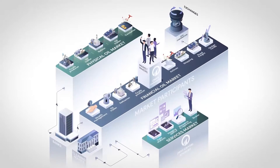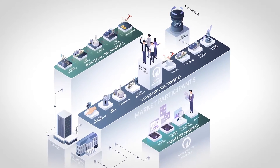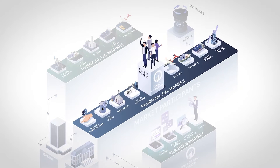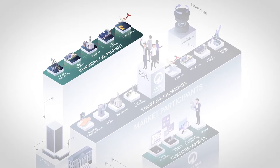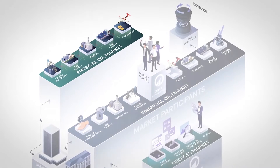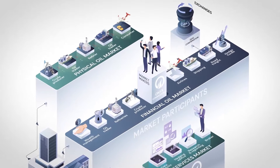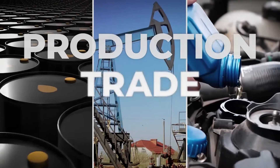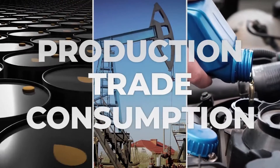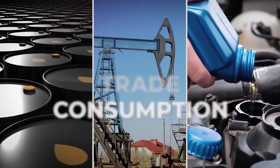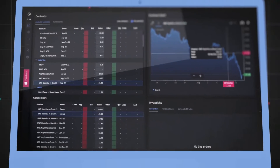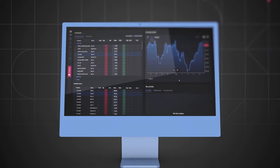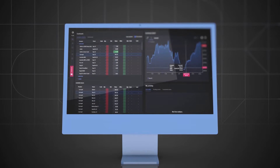The first concept to grasp when looking at the oil derivative market is to understand that the financial market of oil is not the same as the physical market. Both markets work closely together but play very different roles. The physical oil market is the production, trade and consumption of the physical commodity of oil, whereas the financial oil market deals with futures, swaps and options contracts, only some of which end in the physical delivery of oil.